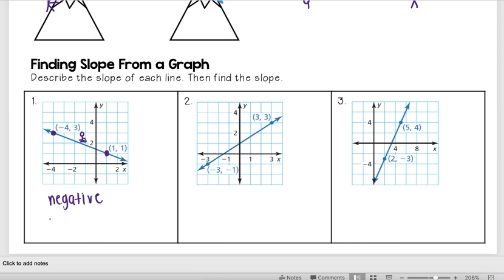So I see to get from this point to this point, I rise up two, and then I go to the left one, two, three, four, five. So I went up two—that was my rise—and I went to the left five. And so since I went to the left, that's going to be negative.